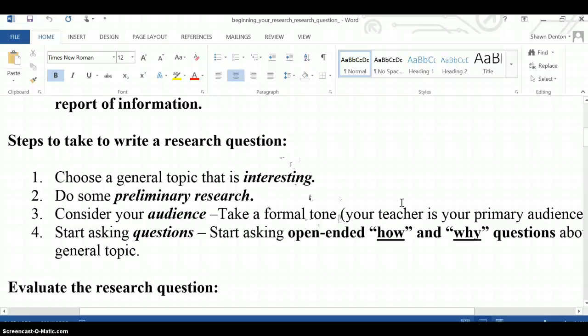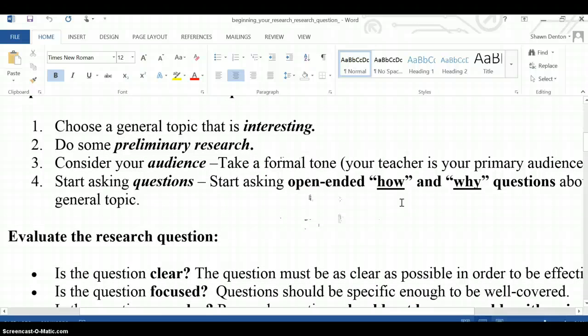Now, steps to take to write a research question. There are some basics here for you. One, find a topic that's interesting. Now, when it comes to your own main research paper, make sure you find something that you find interesting. If not, I'm going to tell you, hey, you picked this topic I didn't. Yes, I'm forcing you to write a research paper, but you picked this topic. So, make sure it's something that is arguable, but something that you find vastly interesting.